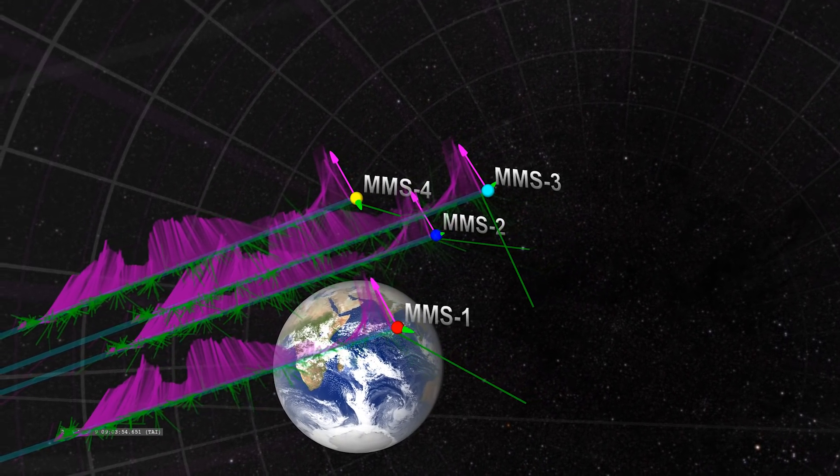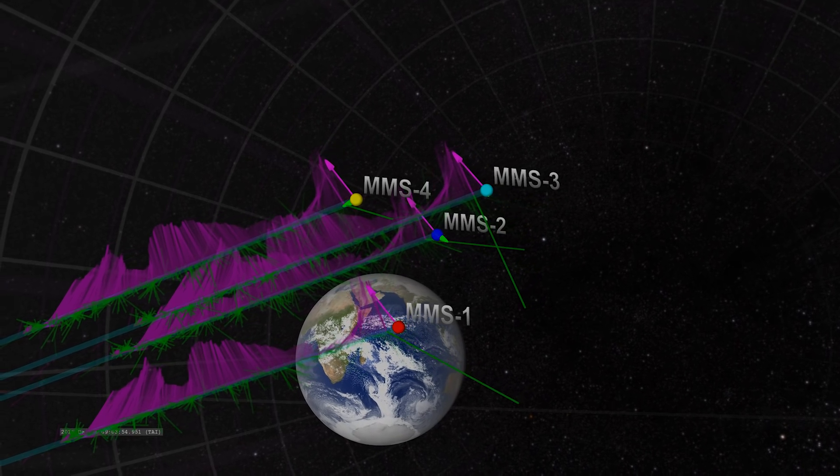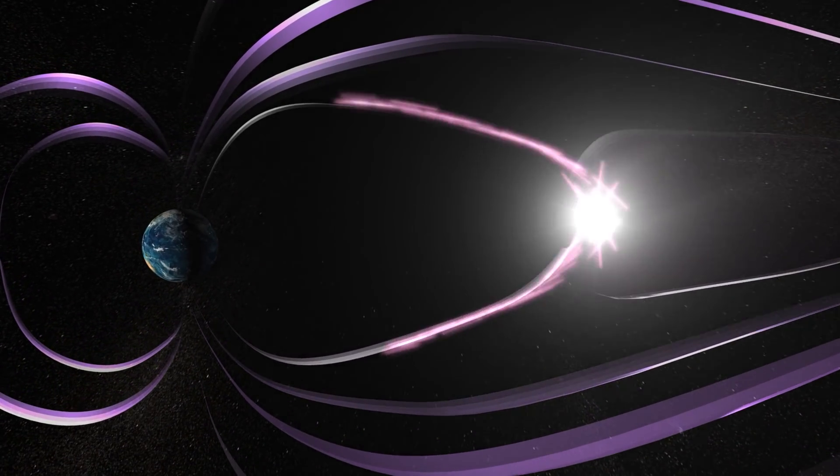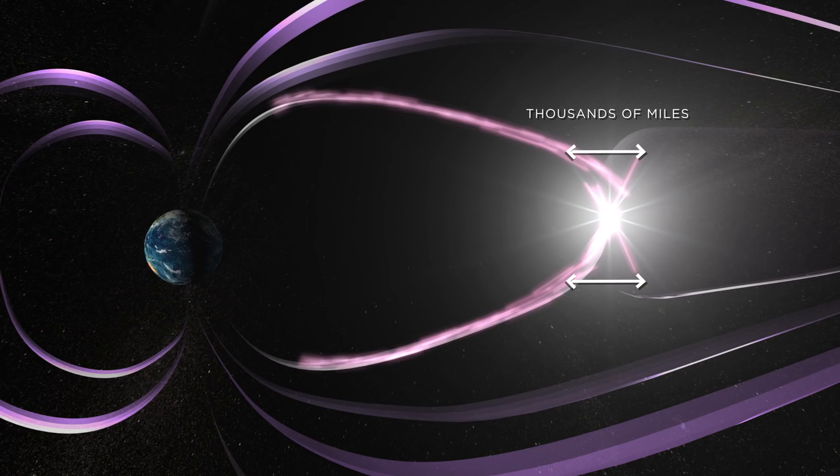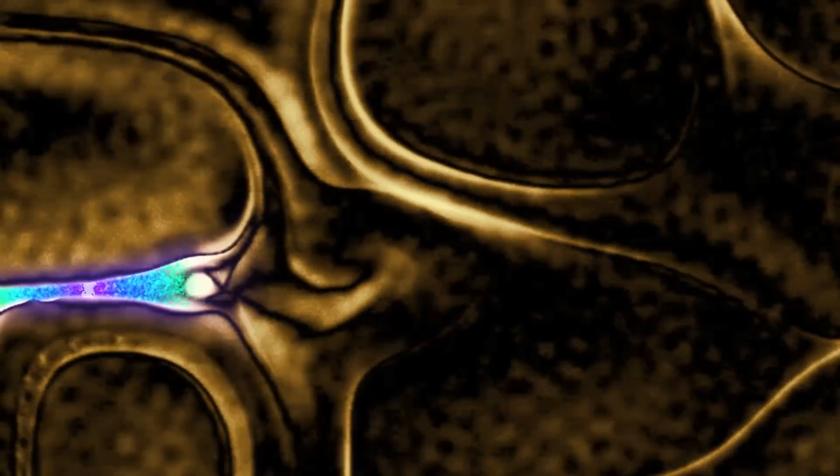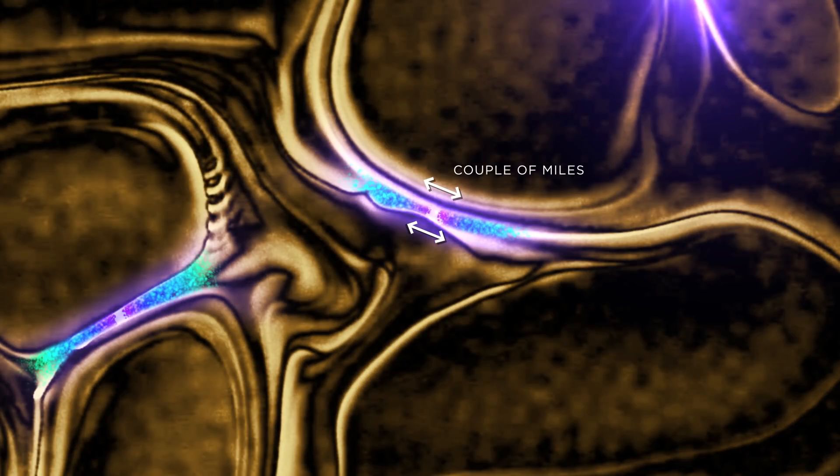But these signatures don't look like standard reconnection. Compared to standard reconnection that occurs over tens of thousands of miles, this new magnetic reconnection spans only a couple of miles within turbulent plasma.